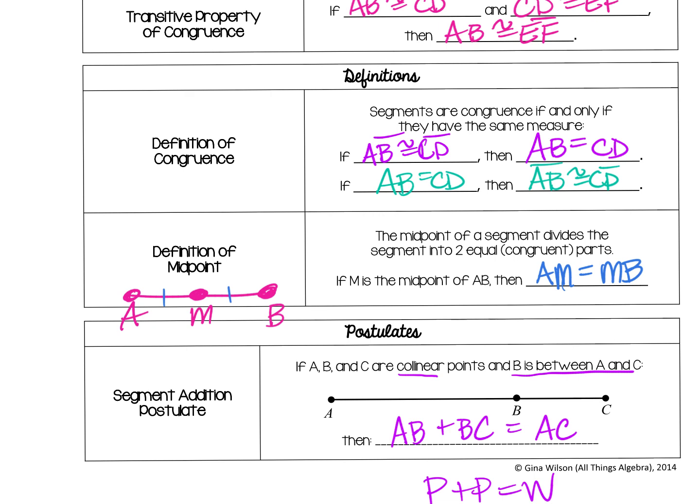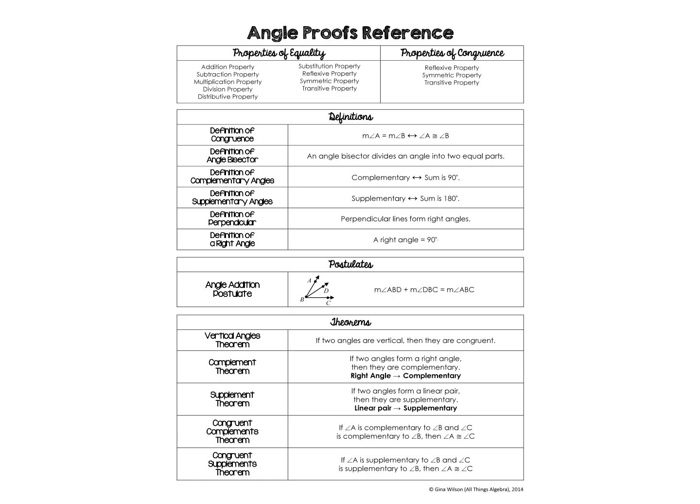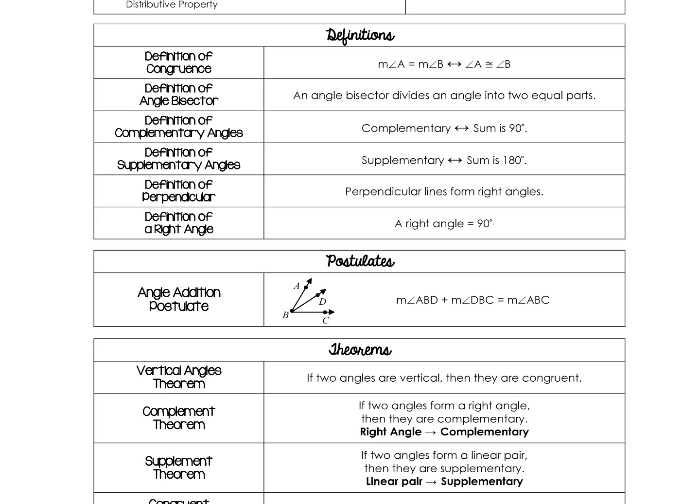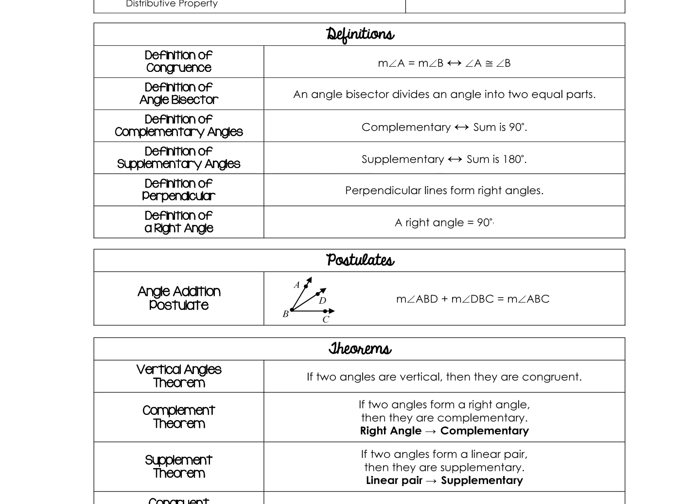These are all going to be your reasons when you start writing your segment proofs. On the other side of your reference sheet, there's not a lot to fill out — it's just for reference. All of the same properties work exactly the same as they do with segments; it's just that this time it's with angles. The definition of congruence for angles: the measure of an angle is equal to the measure of another angle if and only if they are congruent.